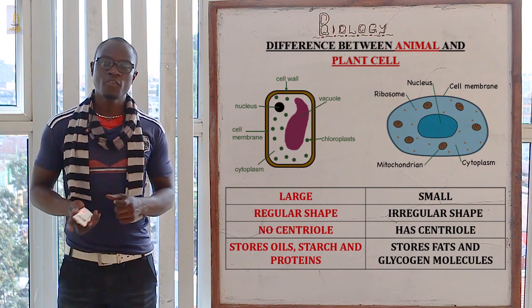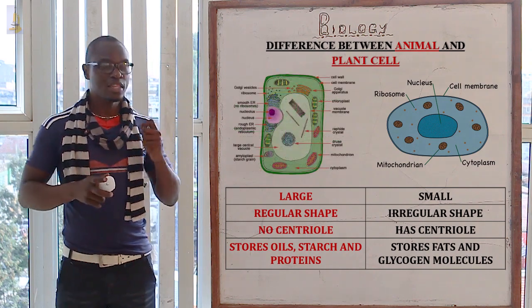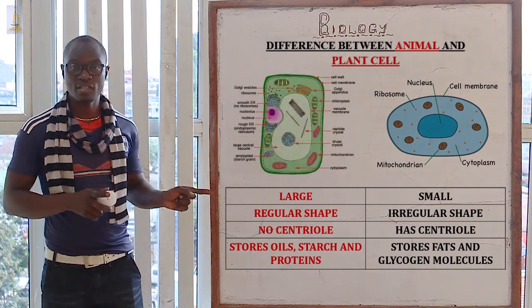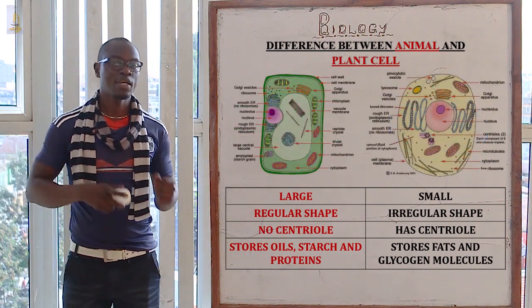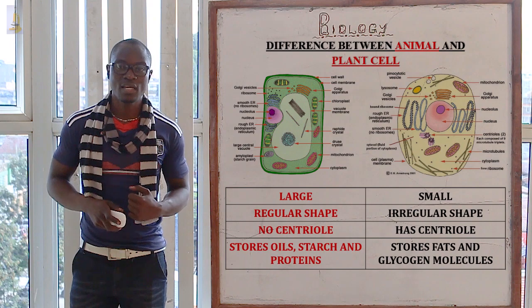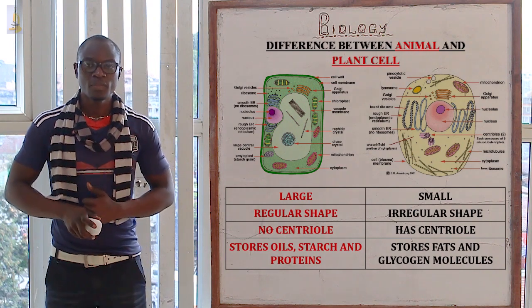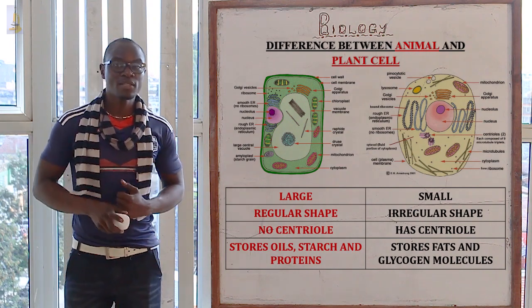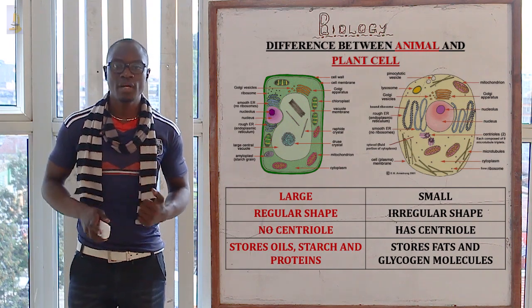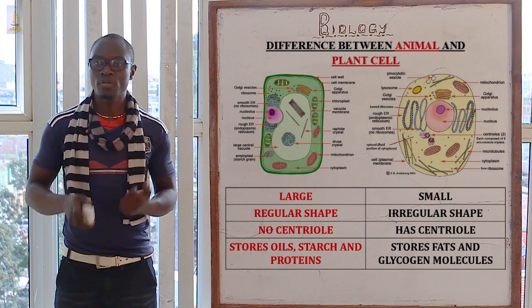For the plant cell, they do not have a centriole, while in the animal cells they have a centriole. For the plant cell, they store oil, starch, and protein.